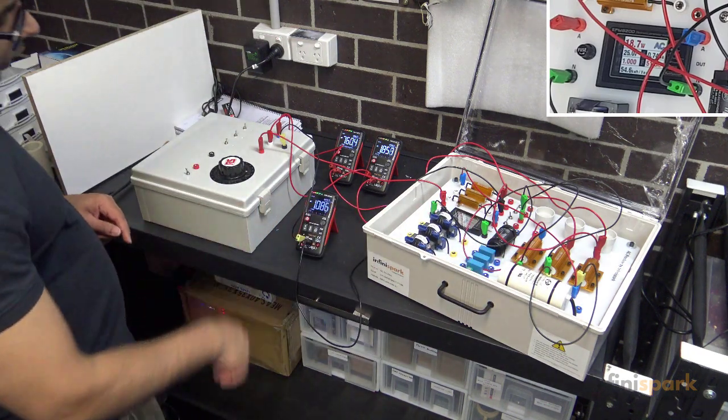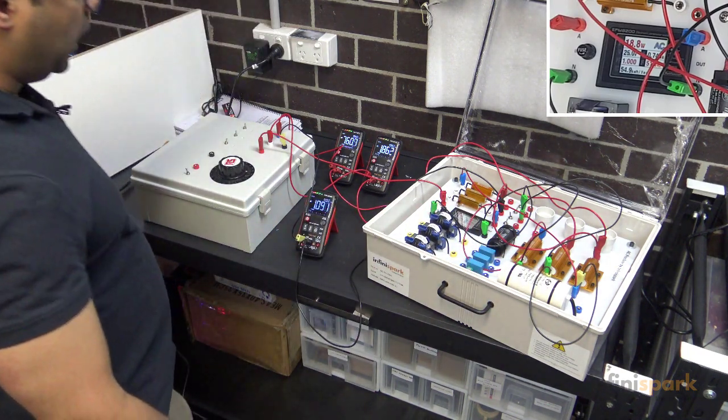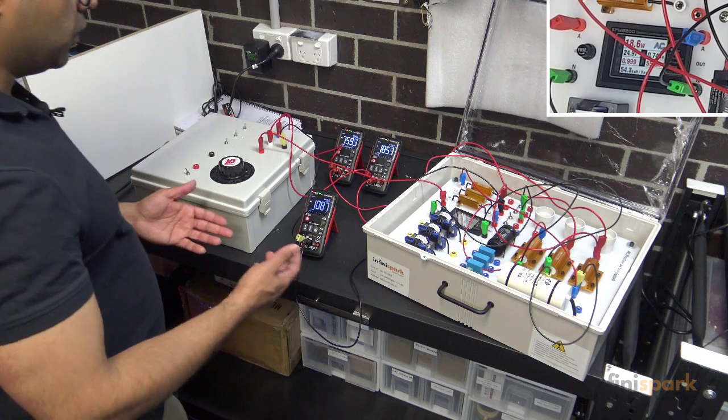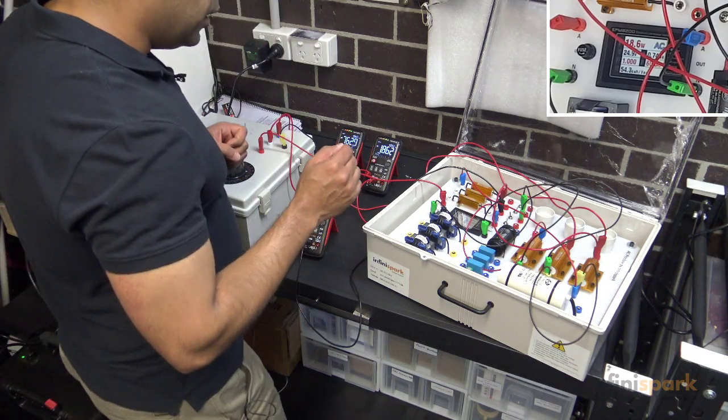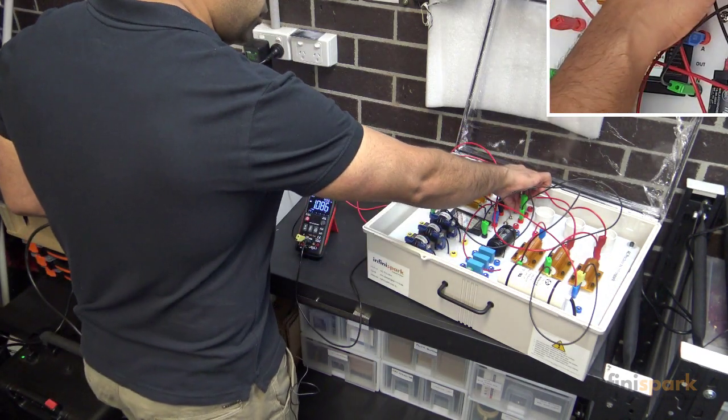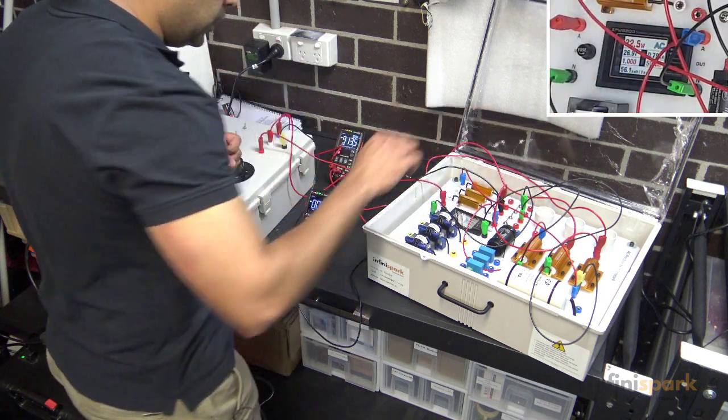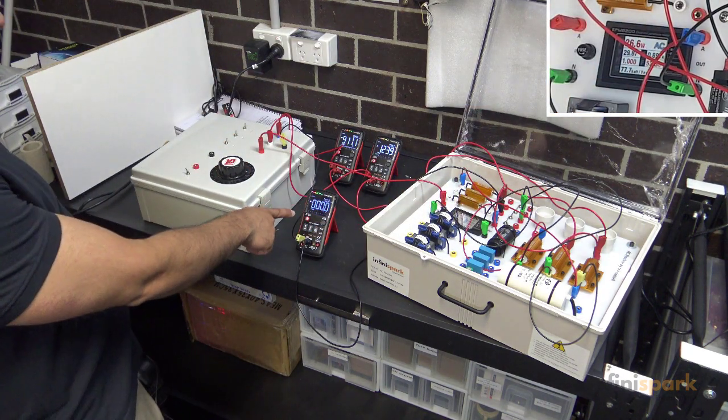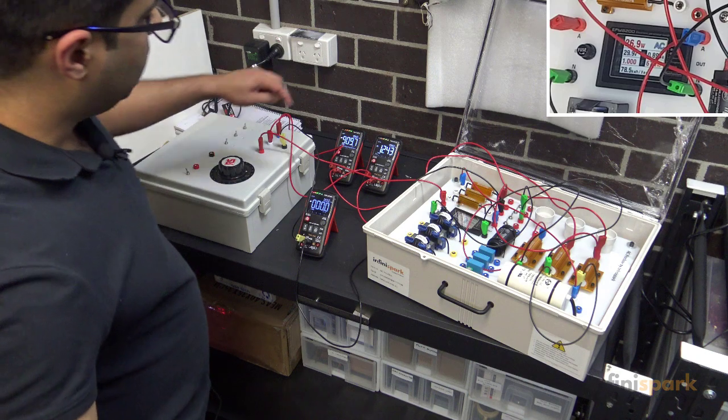Coming out, we have 1.08 amps in the neutral. That's our neutral current. Now if we turn the neutral off, we can see how our neutral current goes to zero and the currents change.